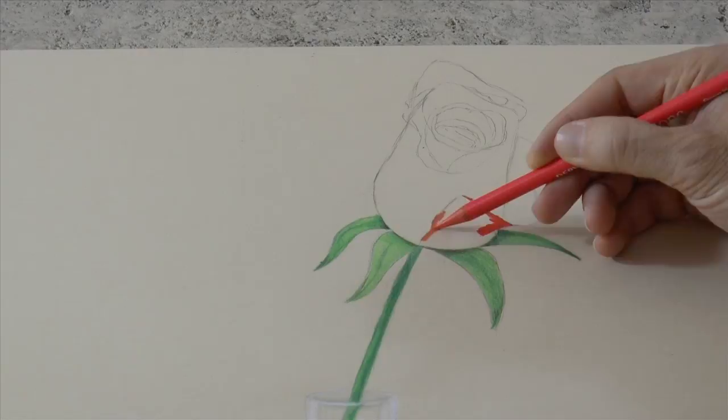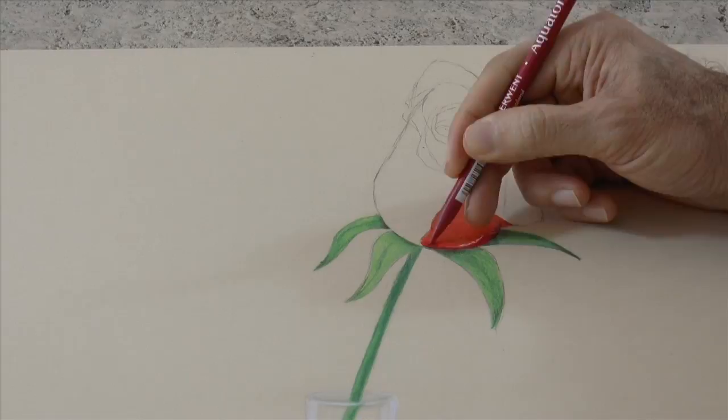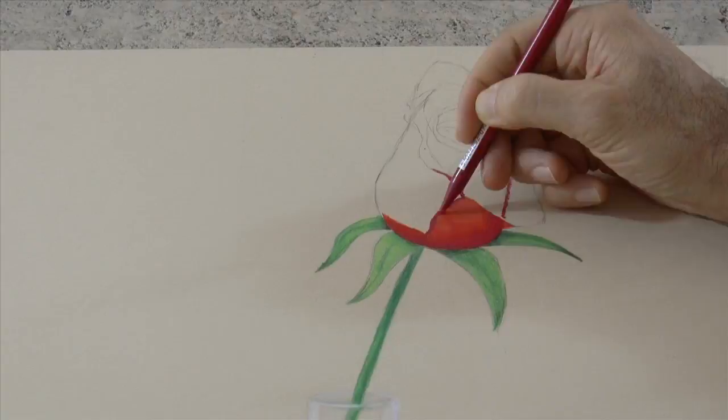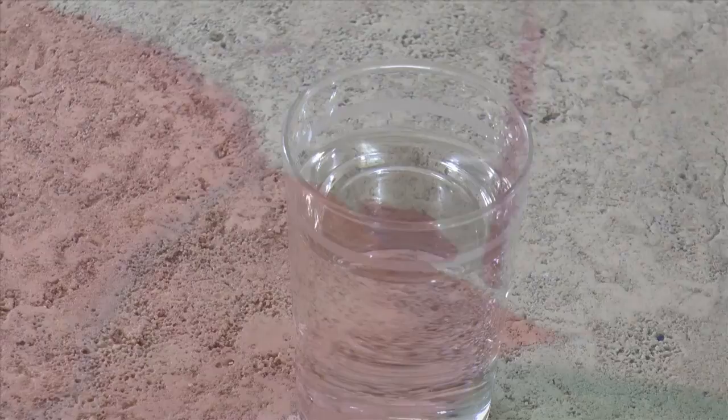For the petals I will use mainly two tones of red. One is practically an orange and the other one is a dark, deep red. This time I will use them with water. When they are wet they are more intense and they mix better.